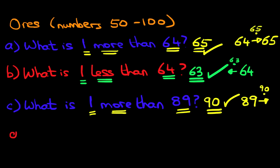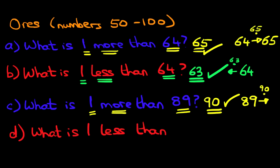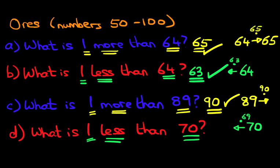And the final question: what is one less than 70? Using the same method — what number are we looking at? We're looking at number 70, so let's write that down: 70. Are we going forwards or backwards? It's less than, so we're going backwards. How much are we going back by? We're going back by 1, there's only one dot. The number before 70 is 69. That is our answer, and we get another tick.